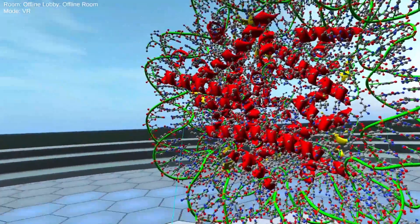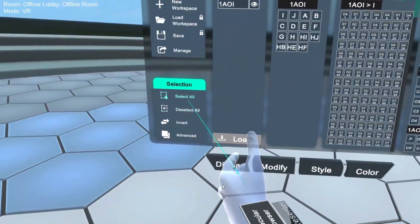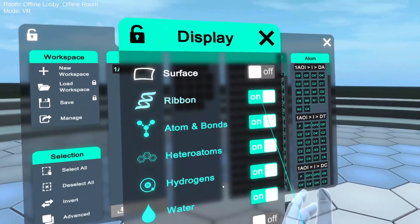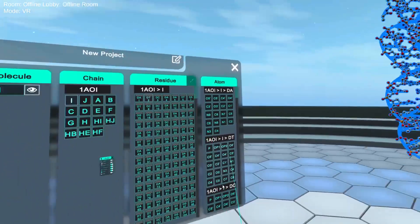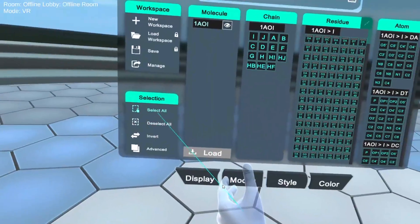Which, once again, further supercoiling will give us our chromatin, which is how it looks in the cell.